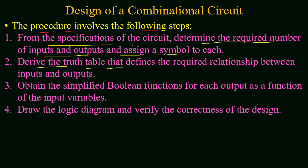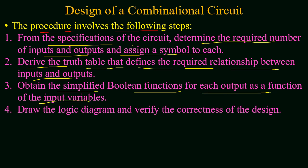In the second step you have to derive the truth table that defines the required relation between input and output. Once you have determined the input and output bits, you have to relate them and compute a truth table. In this table, for all the input combinations the output will be defined. In the third step you have to obtain the simplified boolean function for each output as a function of the input variables. Here you can use the K-map method or solve using boolean algebra.